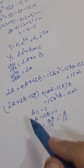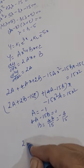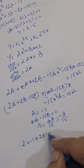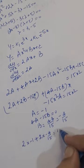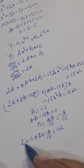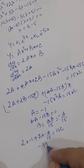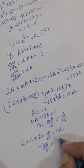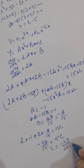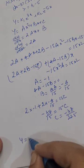Since there is no constant term on the right-hand side, 2a + 2b − 15c = 0. Substituting a = −1 and b = −4/15: 2(−1) + 2(−4/15) = 15c, giving −2 − 8/15 = 15c, so −38/15 = 15c, therefore c = −38/225.